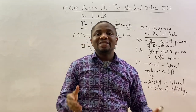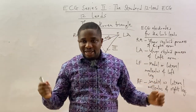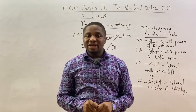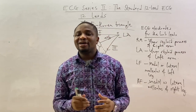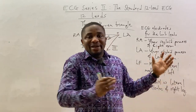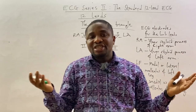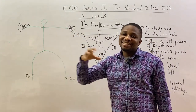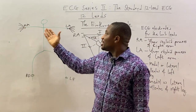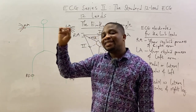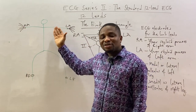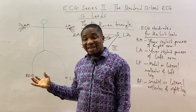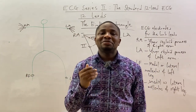The left foot electrode is placed at either the medial or lateral malleolus of the left foot. The right foot electrode is also placed at the medial or lateral malleolus of the right foot. The right foot electrode does not have obvious significance in the standard 12-lead ECG, but it is still placed. Once all these electrodes are placed, we can identify the limb leads.